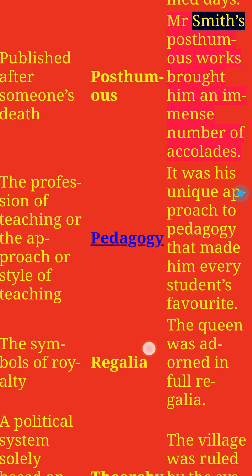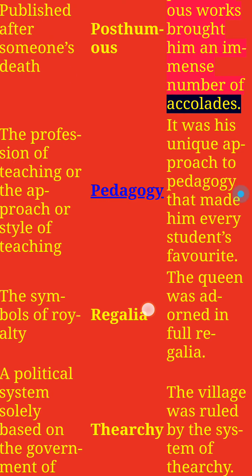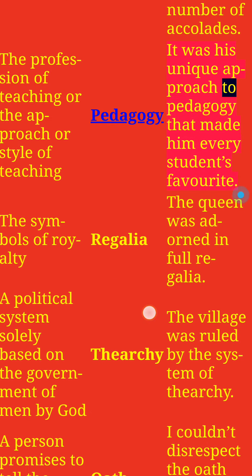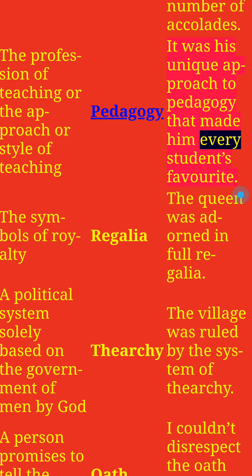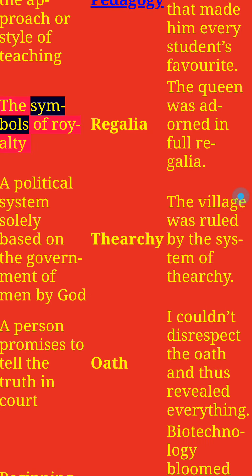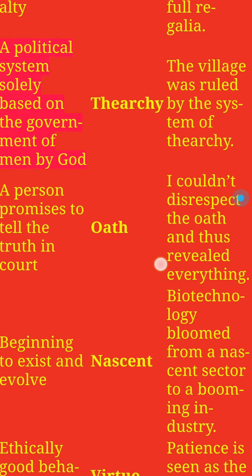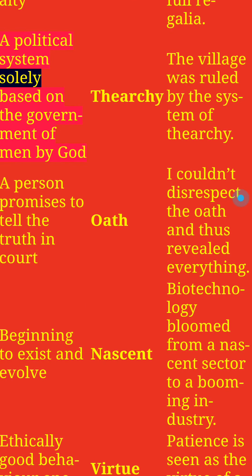A shelter for a dog: Kennel. Our new pup spent all his day hiding inside the kennel. Where wild animals live: Lair. I found a hidden lair in the forest but was too afraid to go inside it. A place where coins are made: Mint. This industrial facility is actually a mint which manufactures coins. Ordinary and dull: Mundane. I am bored with the mundane life of the quarantined days. Published after someone's death: Posthumous. Mr. Smith's posthumous works brought him an immense number of accolades.